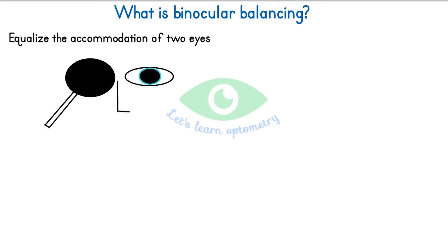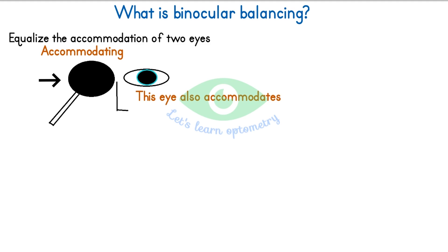During monocular refraction, we place the occluder in front of the non-tested eye. The occluder acts as a near target in front of that eye. The awareness of the near target can induce proximal accommodation and accommodation due to vergence in the eye behind it, so that the eye being tested may also be accommodating.